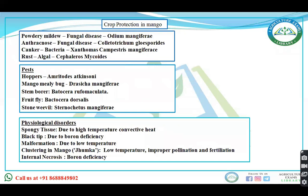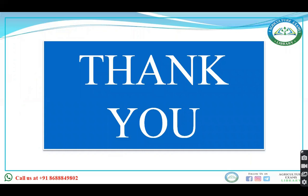Physiological disorders: spongy tissue — due to high temperature; black tip — due to boron deficiency; mango malformation — fungal disease, also caused by low temperature; clustering in mango — due to low temperature, improper pollination and fertilization; internal necrosis — due to boron deficiency. This complete information regarding the mango is enough for the purpose of examination.